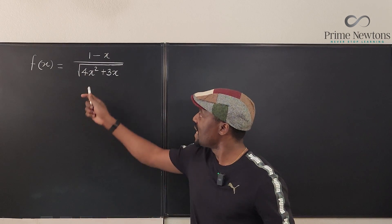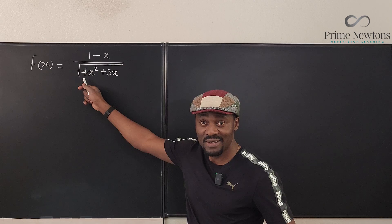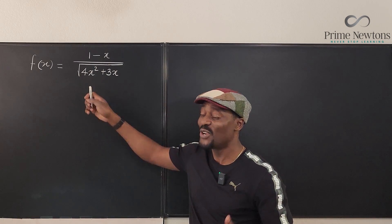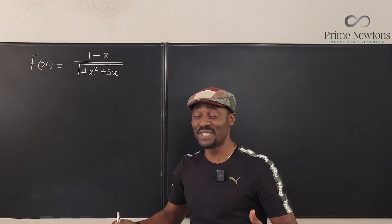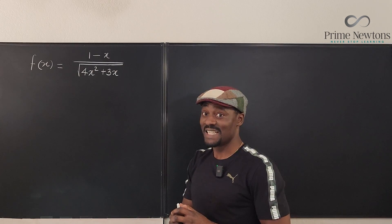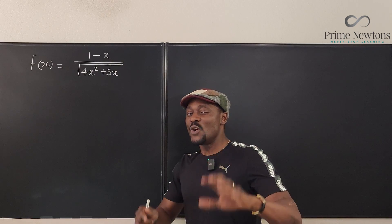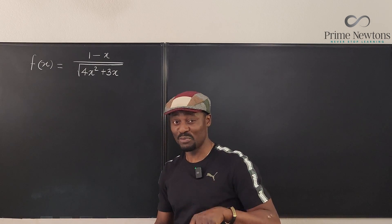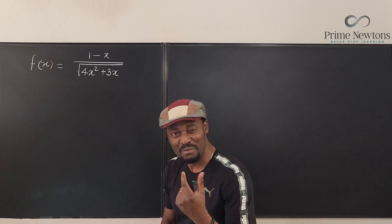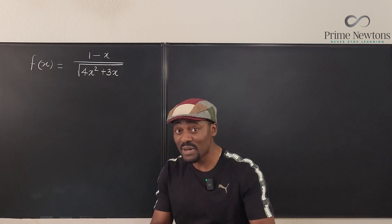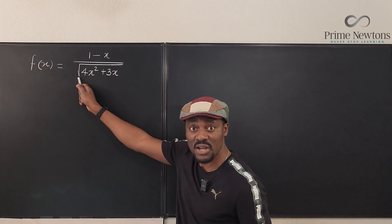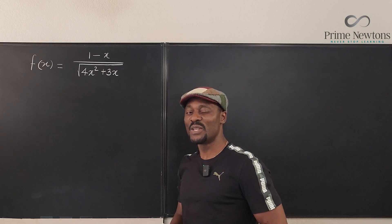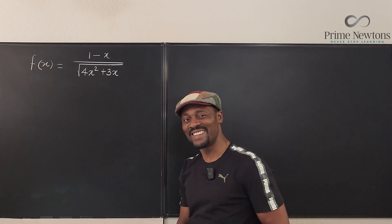I want to draw your attention to something that usually causes trouble for students: the square root sign. Whenever you have a square root sign it causes a lot of trouble, and I want to address that. I've done about two or three videos on this issue, but while preparing for this video I figured out a much nicer way — whether the square root sign is in the numerator or denominator, you can always solve it. Let's get into the video.